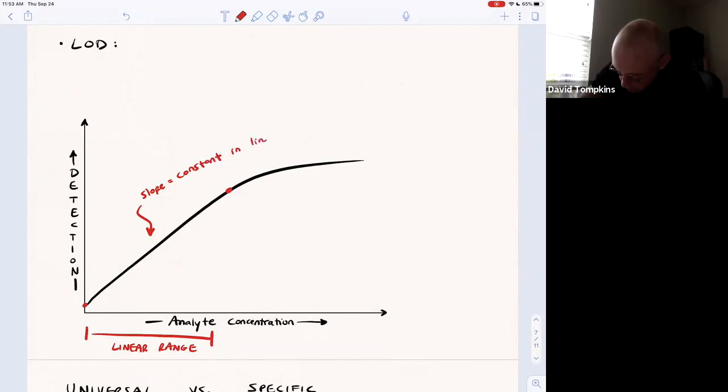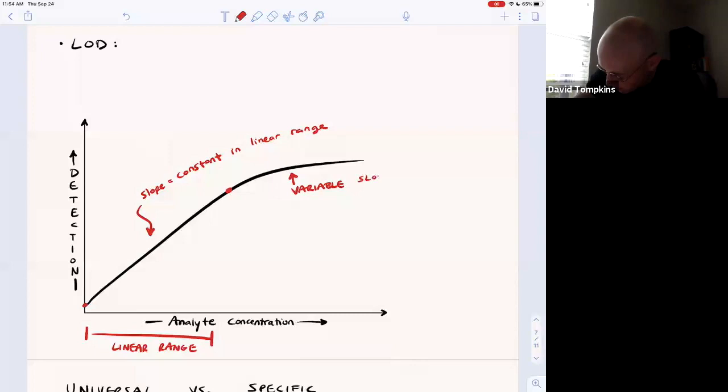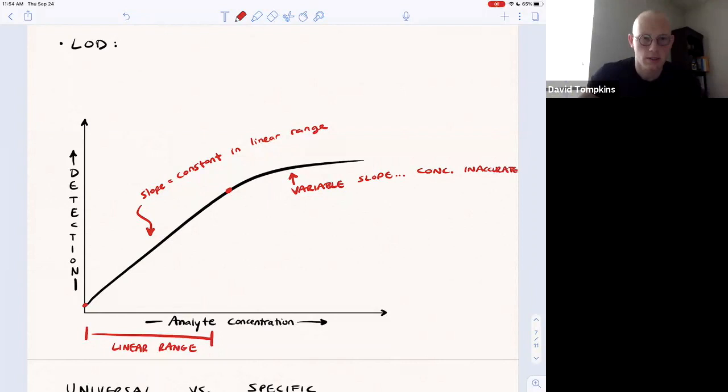Generally, if you're trying to accurately determine concentration, you will just neglect anything that has curvature or has a non-constant slope. Up here we have a variable slope and that presents the issue of peak area no longer being proportional to concentration, or the concentration determination would be inaccurate.